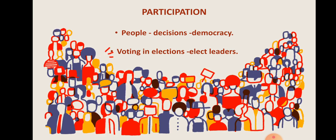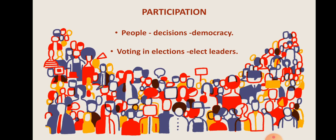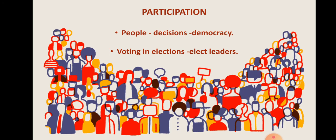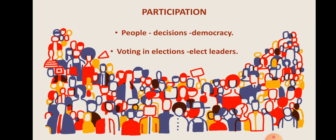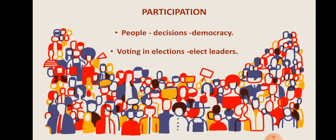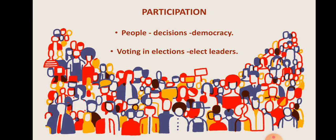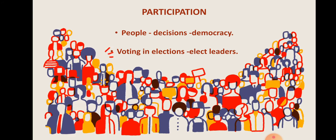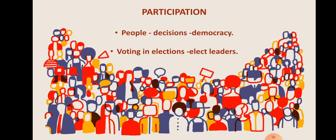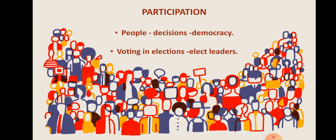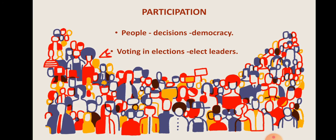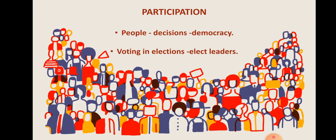All governments are elected for fixed periods. In India, this period is for 5 years. Once elected, governments can stay in power only for that period. If they want to continue to be in power, they have to be re-elected by the people. This is a moment when people can sense their power in democracy. In this way, the power of the government gets limited by regular elections.